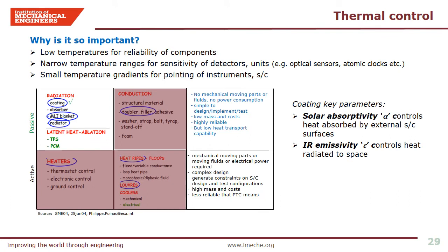Now let's look into thermal control and why it is so important. Firstly, low temperatures help reliability of components. Secondly, narrow temperature ranges are often required for sensitivity of detectors. Thirdly, small temperature gradients are needed for pointing of instruments and spacecraft. Key parameters of thermal control include solar absorptivity, which controls heat absorbed by external spacecraft surfaces, and infrared emissivity that controls heat radiating to space. There are different thermal control methods such as passive and active thermal control. Coatings belong to the passive thermal control method, which benefits from no mechanical moving parts, no fluids, and no power consumption. Passive thermal control is comparatively simple to design, implement and test, with low mass and cost implications, and is highly reliable.